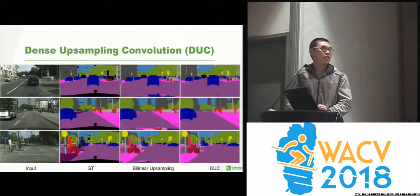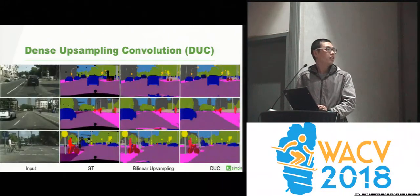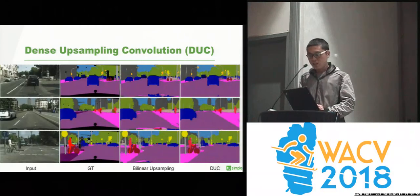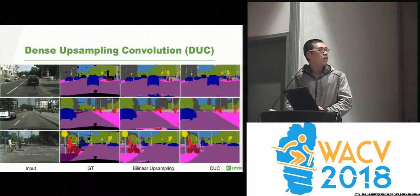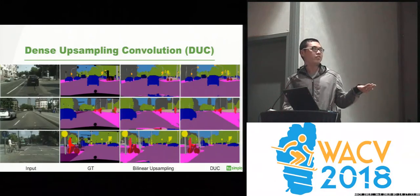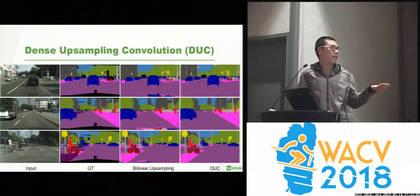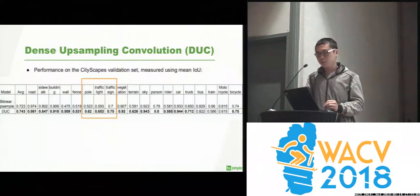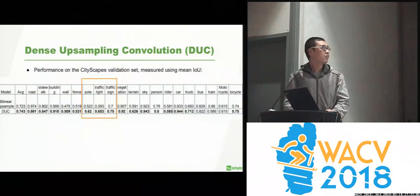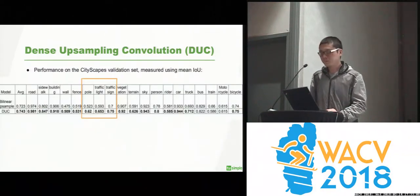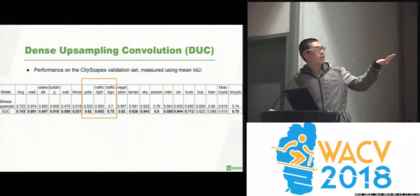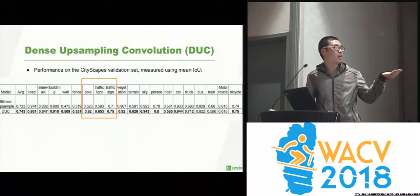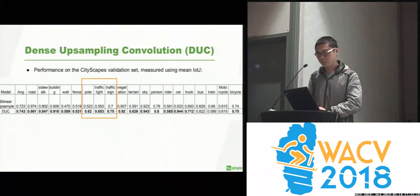Here are some examples on the Cityscapes dataset. Qualitatively, our DUC technique shows better performance compared with bilinear upsampling. In the quantitative results, you can see it outperforms bilinear upsampling on almost all categories — and is especially strong for small objects such as poles, traffic signs, and traffic lights.